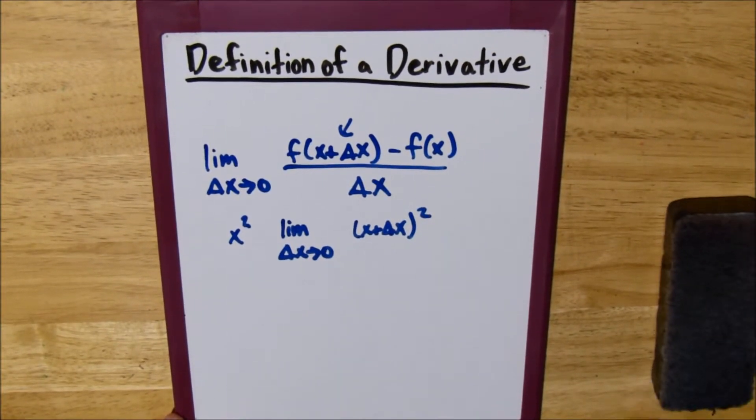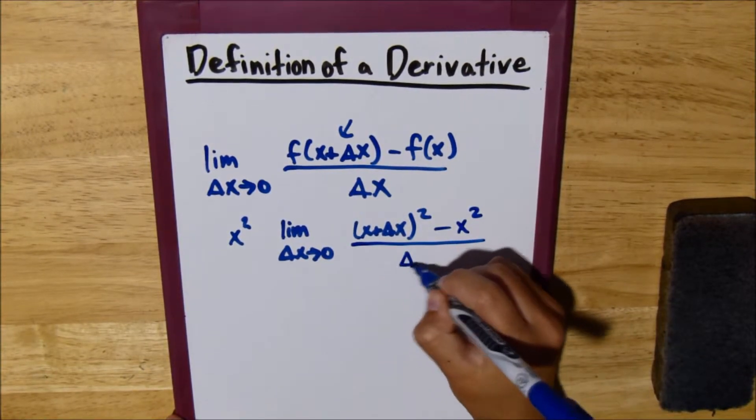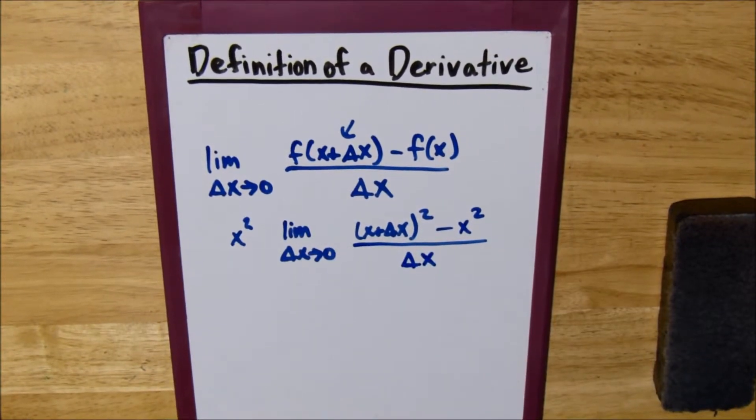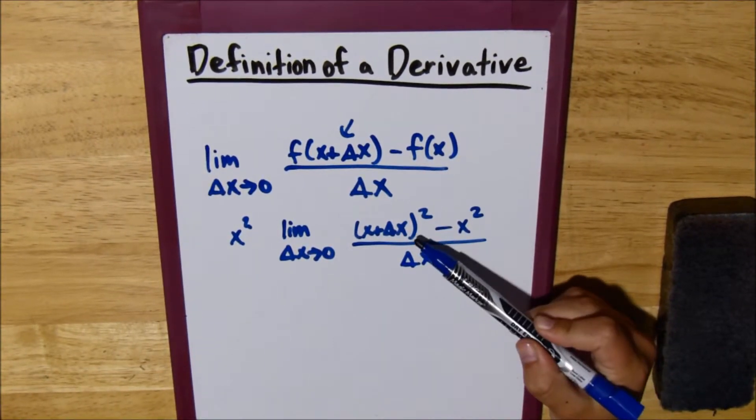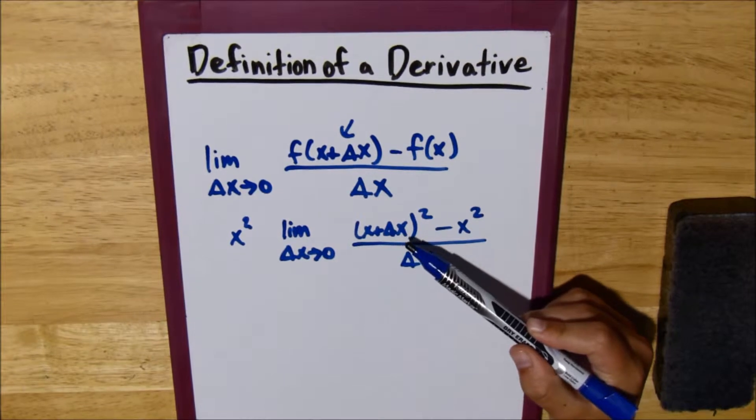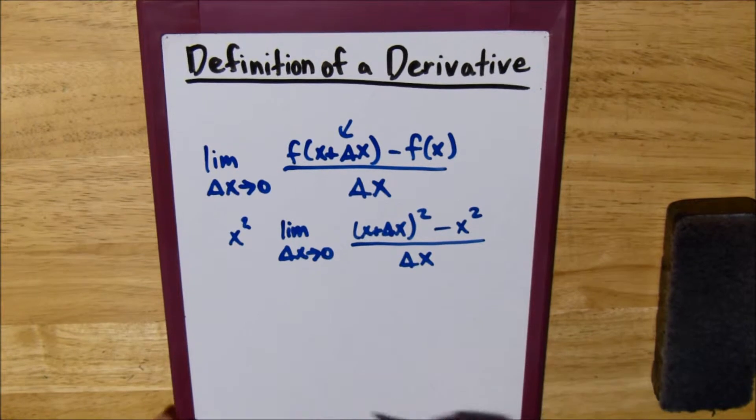And then, we subtract our function, so minus x squared, all over delta x. Now, on to our second step, you'll see that we can foil out this here, and we'll probably end up canceling out with our delta x on the bottom.